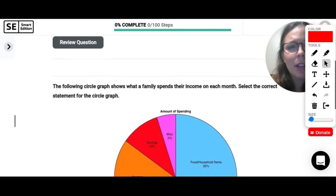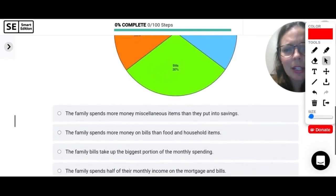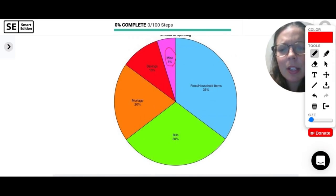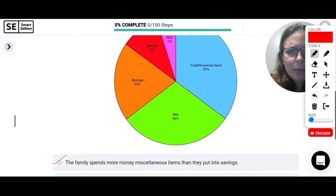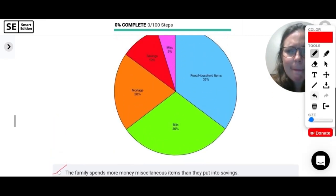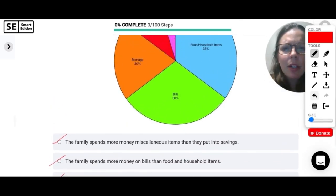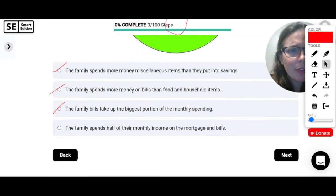The following circle graph shows what a family spends their income on each month. Select the correct statement for the circle graph. So I'm just taking a peek at this graph real quick. Looks like they spend a lot of money on food and household items and their bills. So let's see what our options are. The family spends more money on miscellaneous items than they put into savings. So miscellaneous is here. And that is less than what they put into savings. So that one is not correct. They don't spend more on the miscellaneous items. Family spends more money on bills than food and household items. Bills are 30. Food and household are 35. So that's also not true. Family bills takes up the biggest proportion of the monthly spending. No, food and household items are more. And the last one says the family spends half of their monthly income on mortgage and bills. Mortgage and bills. So that would be 20% and 30%, which would give me 50%. So that would be half of their income, 50%. Perfect.